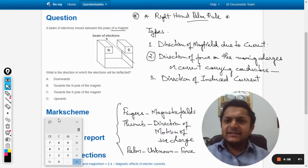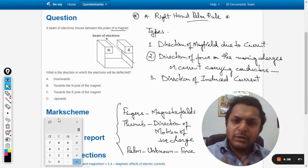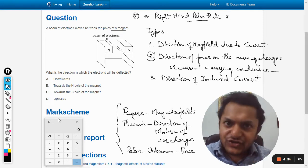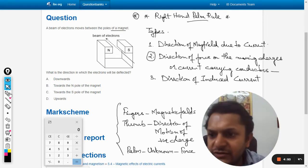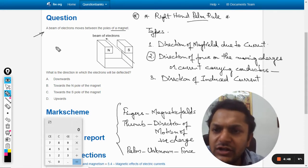Okay dear students, so this is the question about magnetism, about directions. That is why I have written quite some things already on my screen as you can see. Let us read the question: a beam of electrons